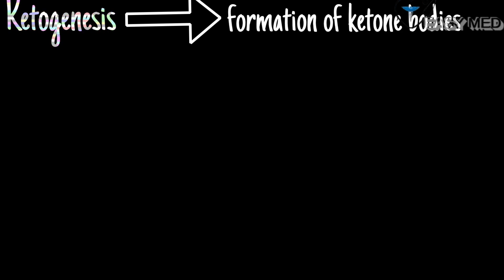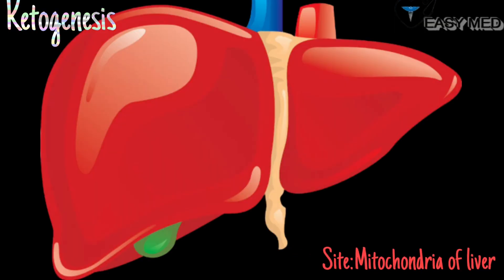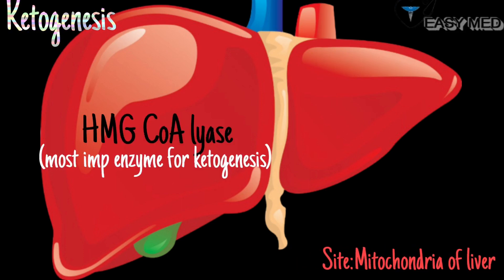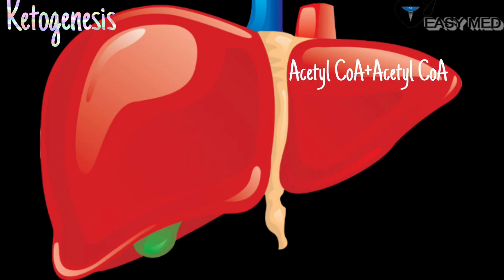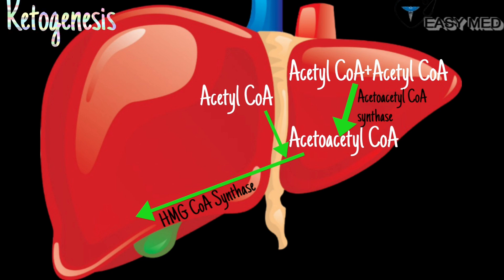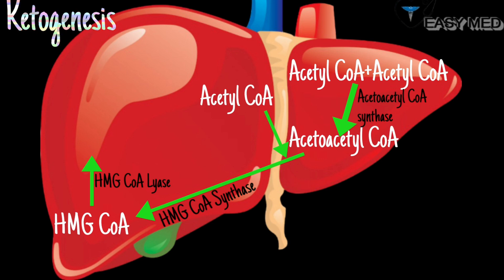Ketogenesis is the formation of ketone bodies, which occurs in the liver, as the liver has the enzyme HMG-CoA lyase, which is the most important enzyme required in ketogenesis. Firstly, two acetyl-CoA molecules combine to form acetoacetyl-CoA, to which another acetyl-CoA is added, and through the enzyme HMG-CoA synthase, HMG-CoA is produced. HMG-CoA is then acted upon by HMG-CoA lyase to produce acetoacetate and acetyl-CoA.